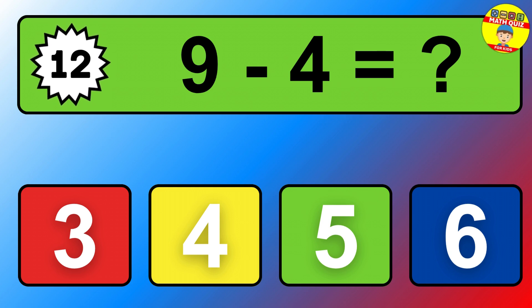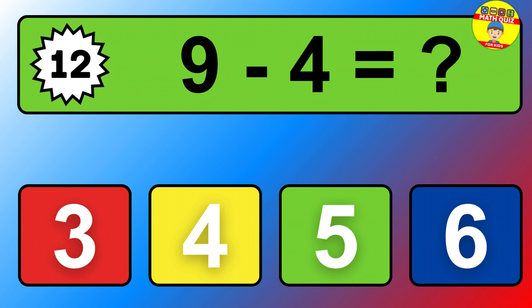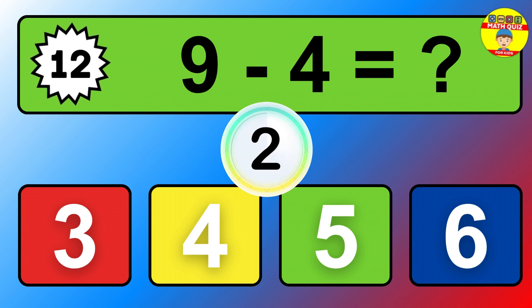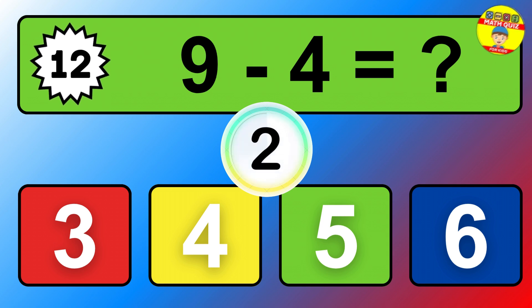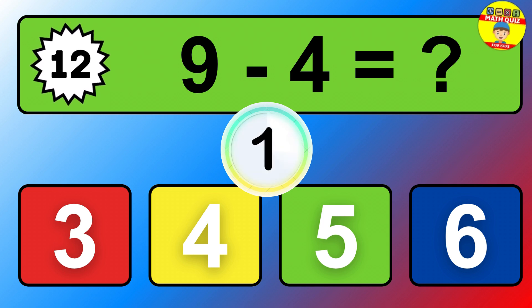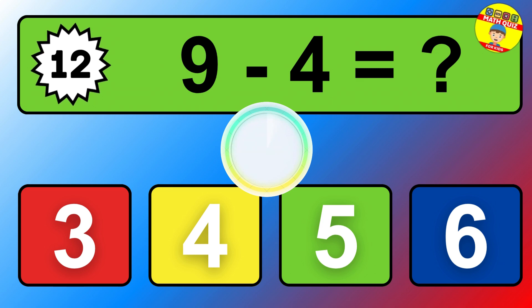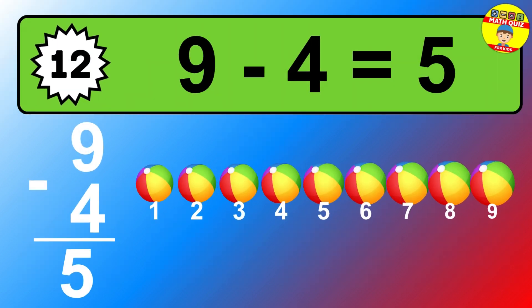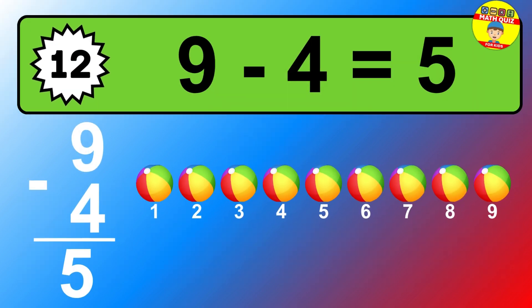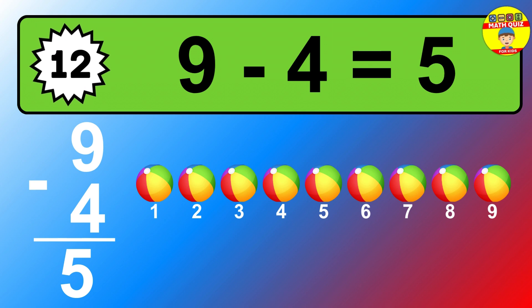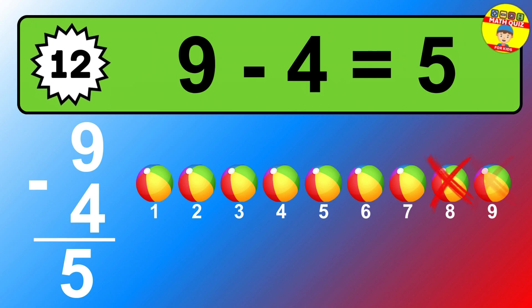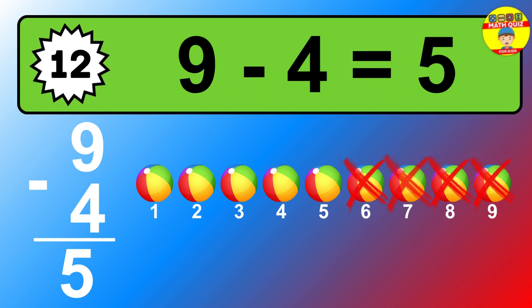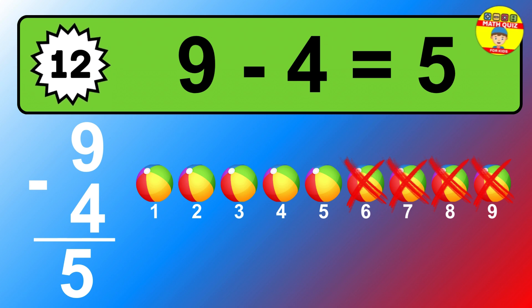Question twelve: nine minus four equals what? So the answer is nine minus four is five. Let's count it. One, two, three, four, five.